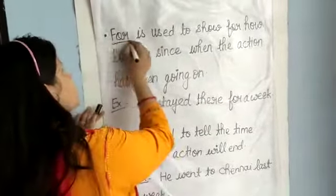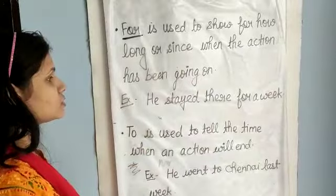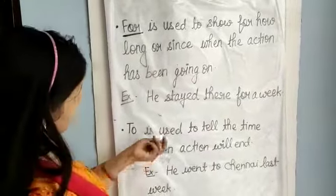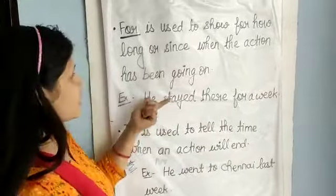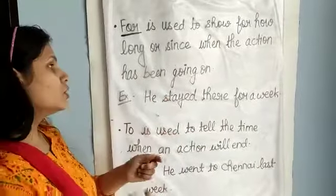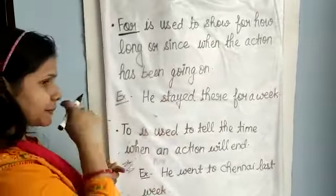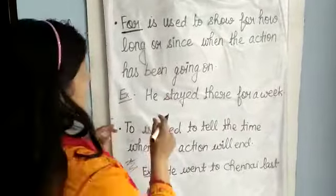Next, 'for'. 'For' is used to show for how long, or how long an action has been going on. When there is a continuing action, 'for' is used — for example: it stayed there for a week.